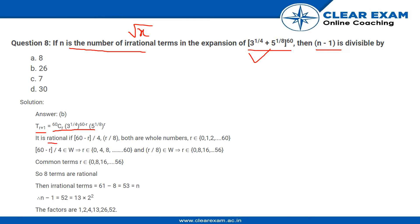These two numbers, 3^(1/4)^(60-r) and 5^(1/8)^r, will be rational if both (60-r)/4 and r/8 are whole numbers.